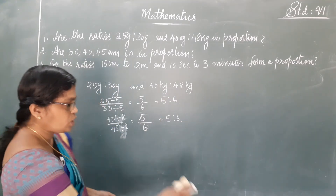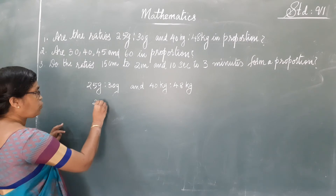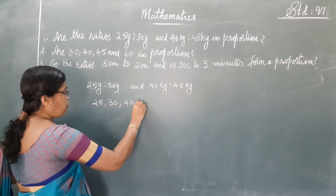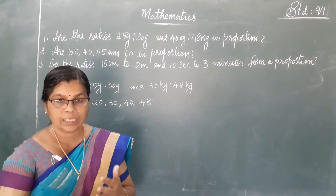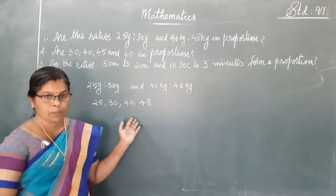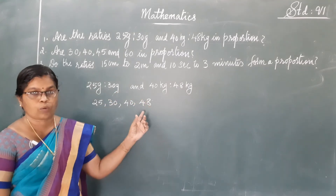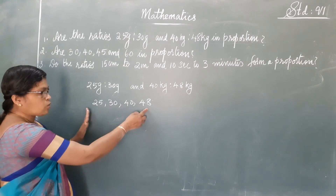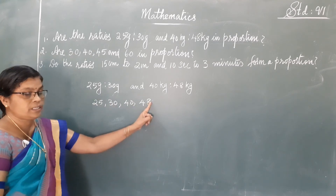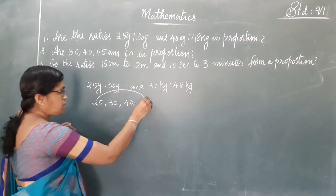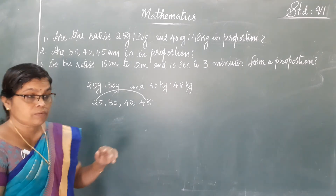Now, instead of this method, we can check in another way. We have seen that 25, 30, 40 and 48 are in proportion. The other way to check whether these four numbers are in proportion is: take the first quantity and the last quantity — the numbers at the extremes, both ends. They are called extreme quantities. We find the product of 25 and 48.